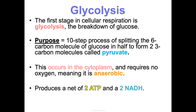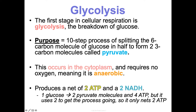Glycolysis is going to make a net of 2 ATP and 2 NADH. There are other energy-carrying molecules like ATP — ATP is the main energy currency, and we learned about NADPH in photosynthesis; now we're learning about NADH. One glucose makes two pyruvate molecules and charges up 4 ATP, but it uses 2 to get the whole thing going, so the net is 2 ATP overall.